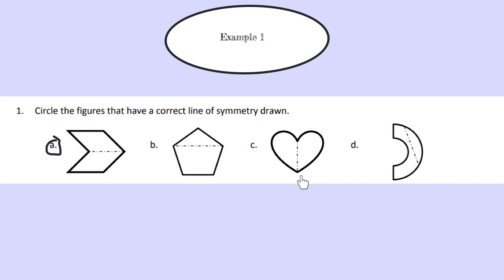Moving on to part C, we have our line of symmetry which is right in the middle, cutting our shape in half. And if we were to fold this side of the heart onto this side of the heart, they would match exactly. And finally, for part D, we're going to look at this line right here. Again, we will notice that this is not exactly in the middle of our shape, and if we were to fold this shape onto this shape, they would not match exactly. Therefore, part D does not have a correct line of symmetry drawn.